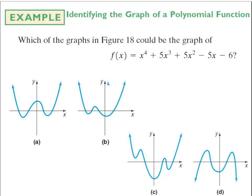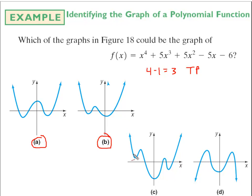Revisiting the earlier example with the knowledge of turning points: we had originally circled graphs a, b, and c based on end behavior. This is a fourth degree polynomial, so we should have at most 4 minus 1, or 3 turning points. Graph a has 3 turning points — still valid. Graph b also has 3 turning points — still valid. But graph c has 5 turning points, which exceeds the maximum, so letter c is eliminated. Only graphs a and b could feasibly represent this polynomial.